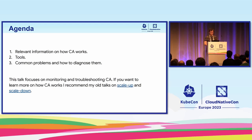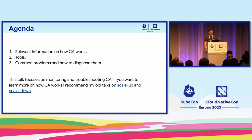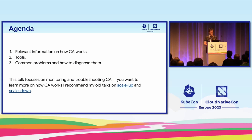Today I'm going to have three parts. I'll start with a quick summary of how Cluster Autoscaler works, focusing only on the parts relevant to understanding what can go wrong and maintaining it. Then I'll quickly discuss some tools — metrics and logs — that are most useful for monitoring and debugging Cluster Autoscaler. Finally, I'll try to illustrate some common issues and how those tools could be used to diagnose them.